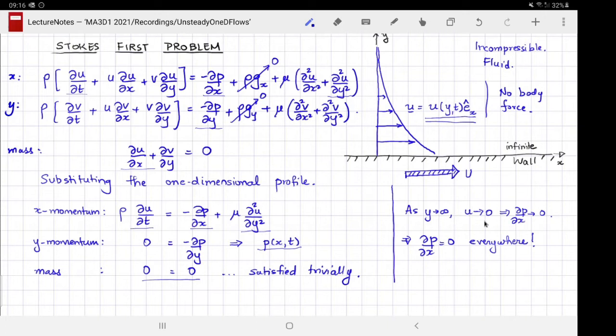As y goes to infinity, if u remains zero, then substituting in this equation or just using your intuition, we know that the pressure gradient there must be zero. If ∂p/∂x is zero far away, and because p does not change with y, pressure only depends on x, and ∂p/∂x is zero far away, it must be zero everywhere. As a result, we have pressure as a function of time alone, and that dependence does not matter because we only care about the x derivative of pressure, which we've now demonstrated to be zero everywhere.